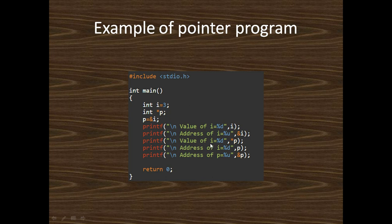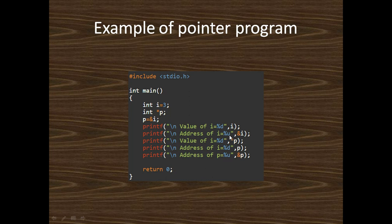When we write printf("%d", *p), star p means it points to the value of i, so it prints i equal to 3. When we write printf("%d", p), p points to the address of i, so it prints the address of i. Again, printf("%u", &p) prints the address of variable p. Here %u is used to print the address of a variable.